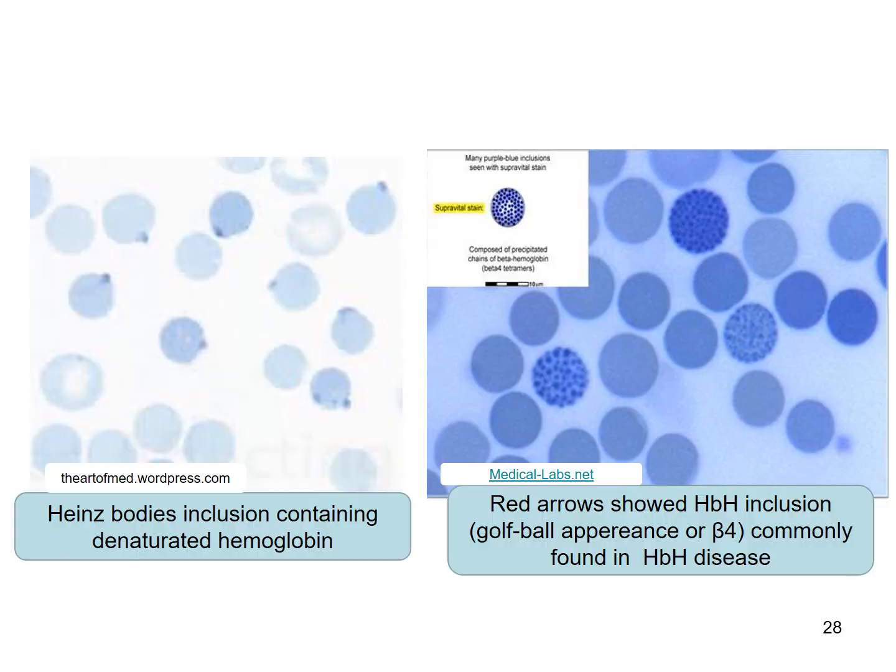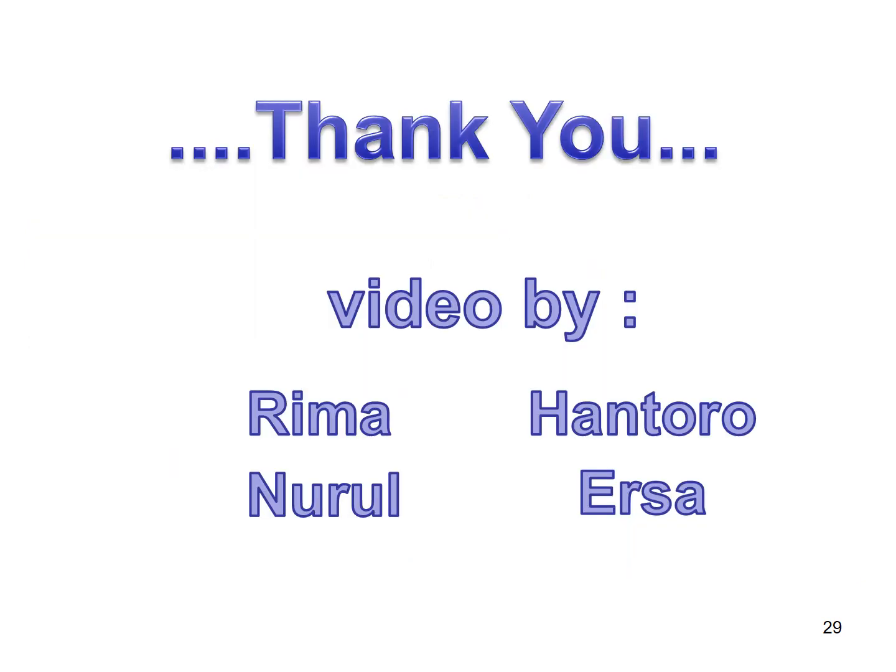The Heinz body inclusions contain denatured hemoglobin. The red arrow shows HbH inclusion, or a golf ball appearance on beta-4 tetramers, commonly found in HbH disease. Thank you.